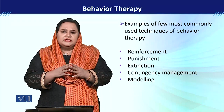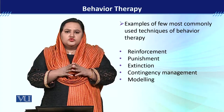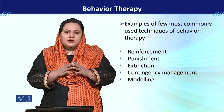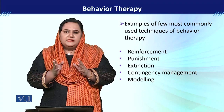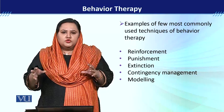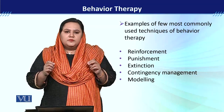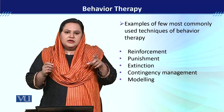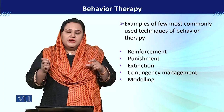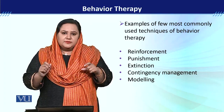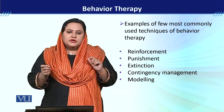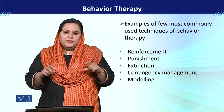Contingency management को इस तरह समझ सकते हो: 'if and then.' अगर आप ये behavior करोगे तो आपको ये मिलेगा. School में जैसे कहा जाता है: अगर आप neat handwriting करोगे तो आपको star मिलेगा. इस तरह if-and-then से एक behavior को reinforcement के साथ contingent कर दिया जाता है.